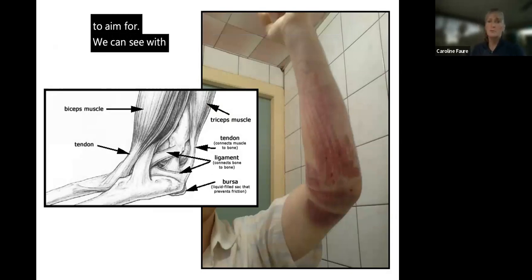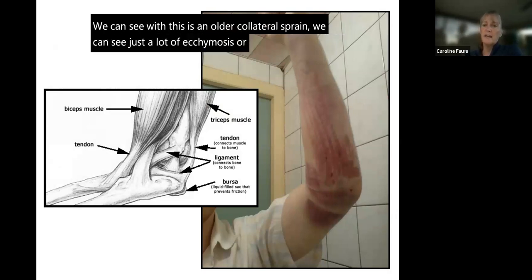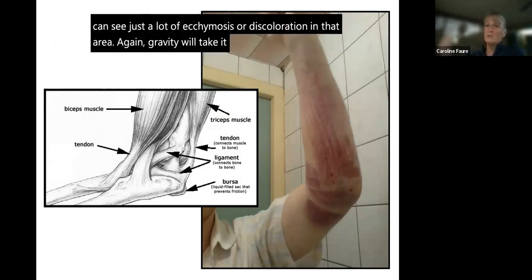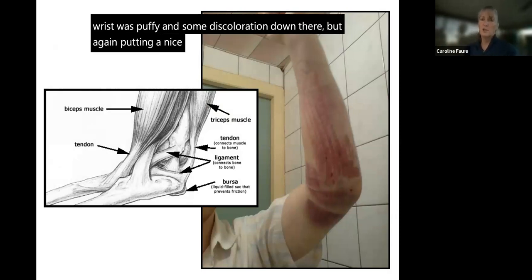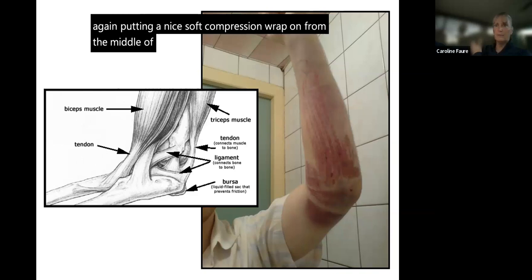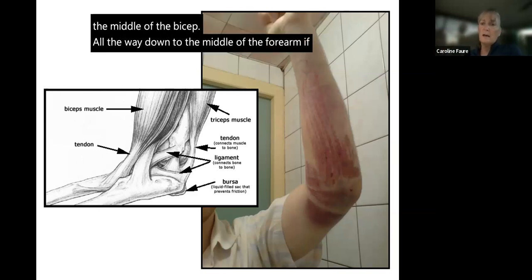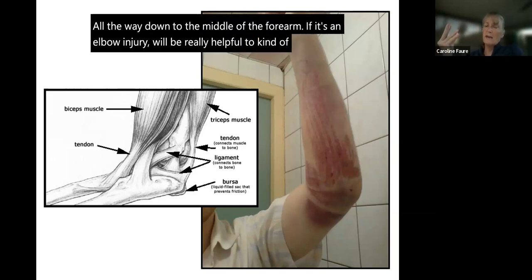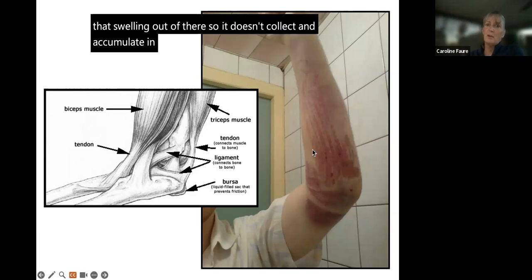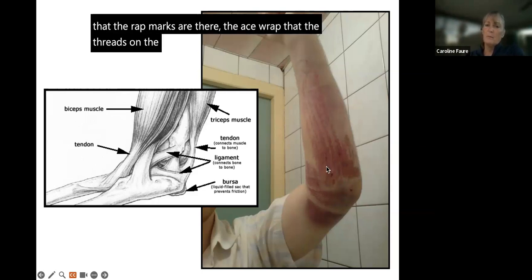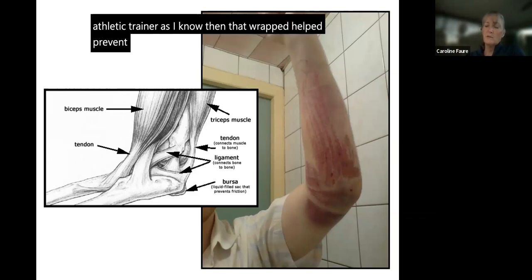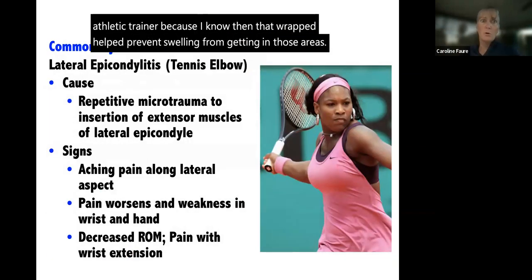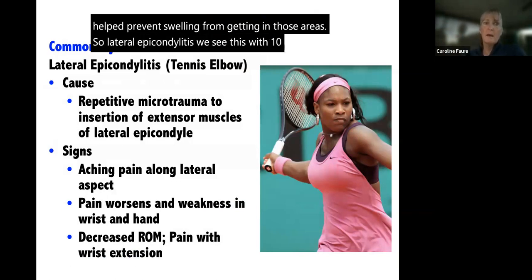With a ulnar collateral sprain, you can see a lot of ecchymosis or discoloration in the area. Gravity will take it down, so don't be surprised if the hand and wrist get puffy with discoloration. Applying a soft compression wrap from the middle of the bicep all the way down to the middle of the forearm will help squeeze that swelling out so it doesn't collect and accumulate. You can see on this athlete that the ace wrap threads are visible — that's a good sign, meaning the wrap helped prevent swelling.